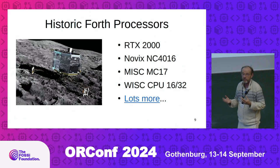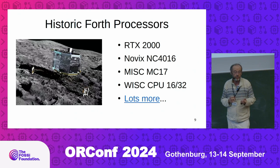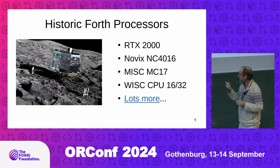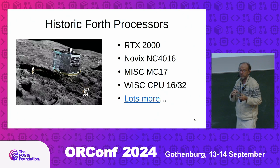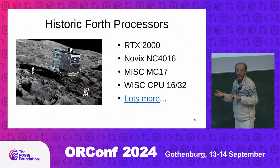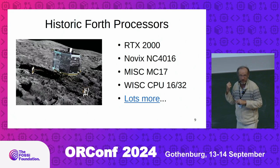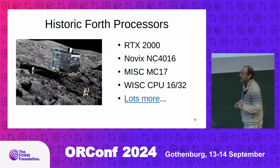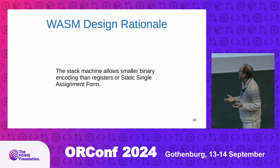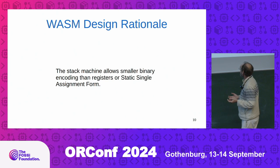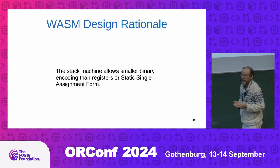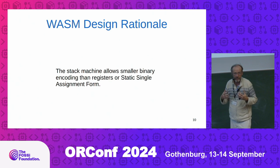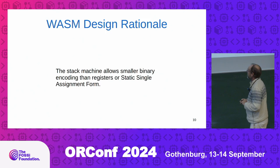Historically, Forth and stack machines have been used very heavily in space exploration. We're coming up on the 10th anniversary of the Philae lander, which was part of the Rosetta mission - run from the Rosetta satellite and landed on a comet for the first time. This had a Forth stack machine in it. There's a long list of space applications, simply because power is so expensive in space. And in fact, even the WebAssembly design document states that the stack machine allows smaller binary encoding than register or static single assignment forms. So it's kind of well known that stack machines have smaller memory.